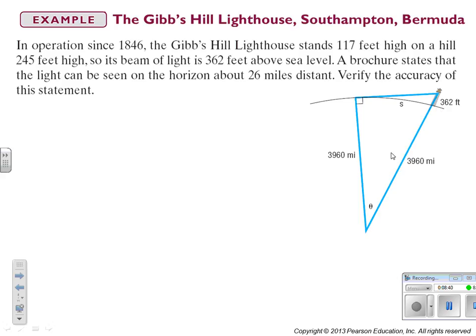We know that the radius of the Earth is 3,960 miles. So, that applies here to this radius as well. A brochure states that the light can be seen on the horizon about 26 miles distance. Verify the accuracy of this statement. So, they're saying this distance is 26 feet. We are going to make that distance A and we're going to go ahead and solve for it.